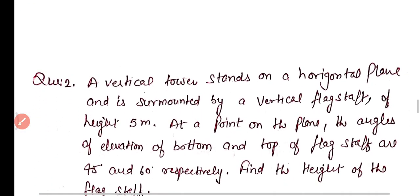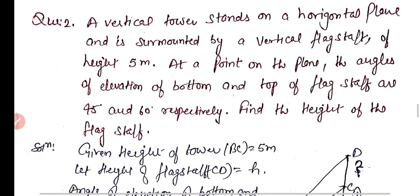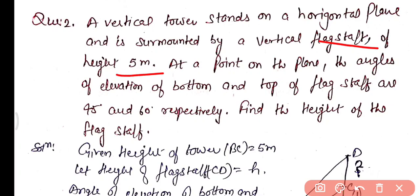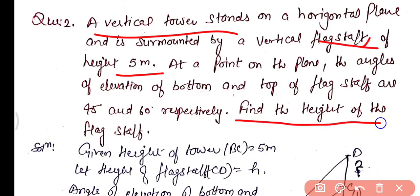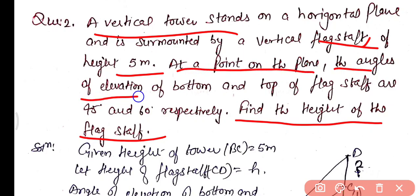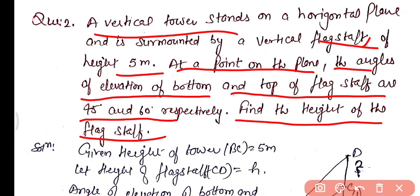Question 2: A vertical tower stands on a horizontal plane and is surmounted by a vertical flagstaff of height 5 meters. At a point on the plane, the angles of elevation of the bottom and top of the flagstaff are 45° and 60° respectively. Find the height of the tower.